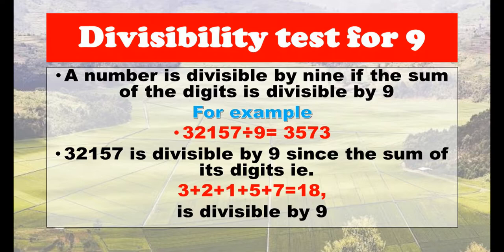Divisibility test for nine: a number is divisible by nine if the sum of its digits is divisible by nine. For example, 32,157 divided by 9 equals 3,573. The number 32,157 is divisible by nine since the sum of its digits — 3 plus 2 plus 1 plus 5 plus 7 — equals 18, and 18 is divisible by nine.